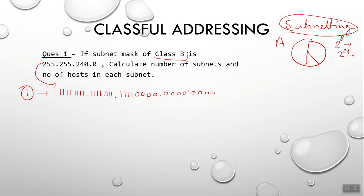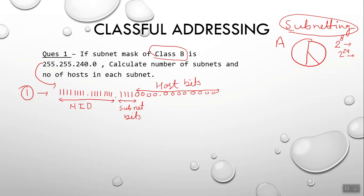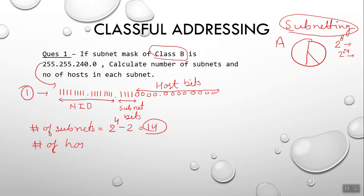This is a Class B address, so the first two octets are the network ID part. The 1s in the remaining octets are the subnet bits, and the remaining 0s are the host bits. The number of subnets will be 2 raised to power 4 minus 2, which equals 14. The number of hosts will be 2 raised to power 12 minus 2, which equals 4094.